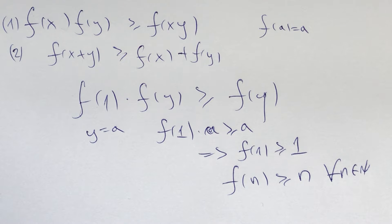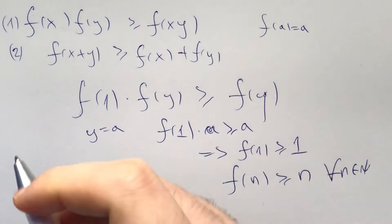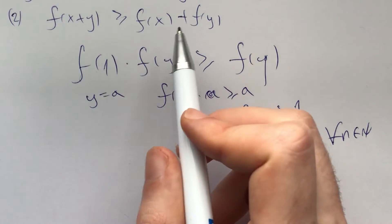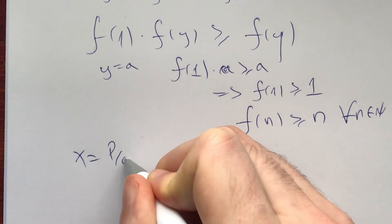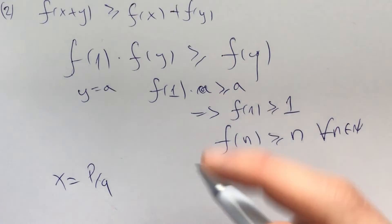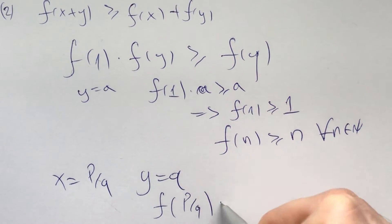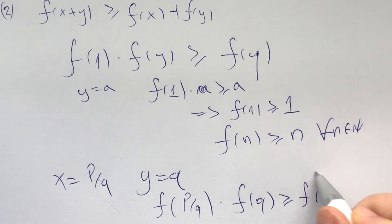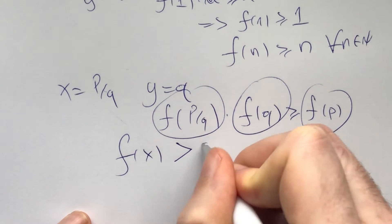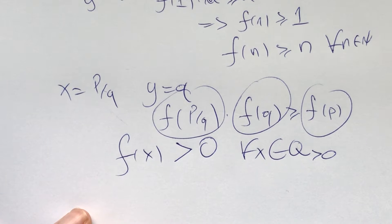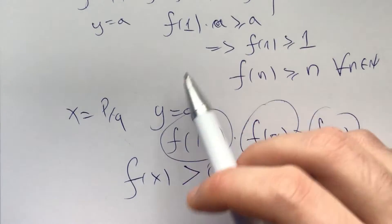With rational numbers, it is often easier to first focus on the integers and then move on to rationals. The idea is to first prove f(n) = n for all natural numbers, then move on. Before that, we need to show all positive rationals map to positive rationals. Plugging x = p/q and y = q into equation one gives f(p/q)·f(q) ≥ f(p), which is positive, so f(x) > 0 for all positive rationals x. This means f is strictly increasing.